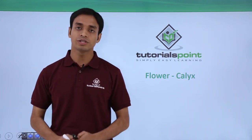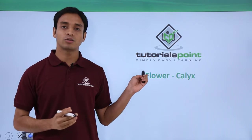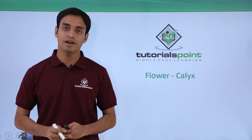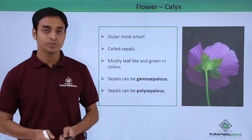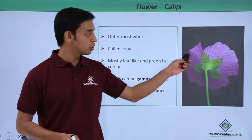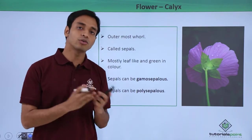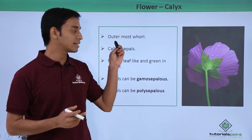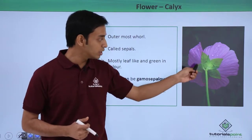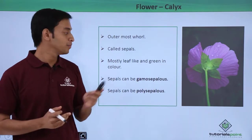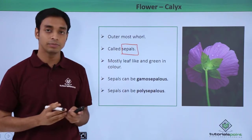Hello everyone, welcome to Tutorials Point. In this video we will be talking about the first structure of a flower, which is the calyx. Calyx is the outermost whorl among the four whorls of a flower. This green part we are seeing is the calyx. These are also known as sepals, so calyx are also called sepals.